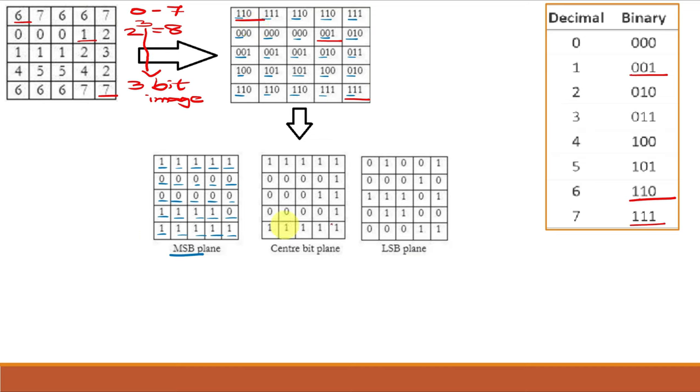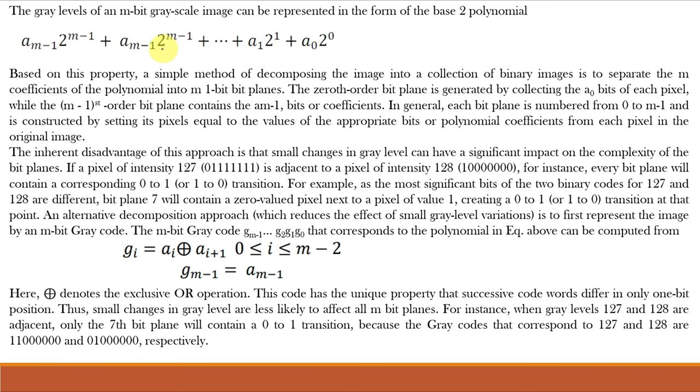Now once we have sliced off our image in such bit planes, we can apply different binary compression techniques like run length coding, LZW coding etc. So this is the theoretical explanation of the previous slide. A decimal value, say 3 is represented as 0, 1, 1 in binary using this equation.